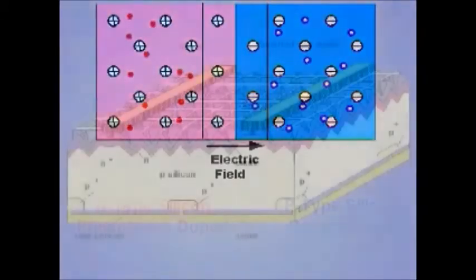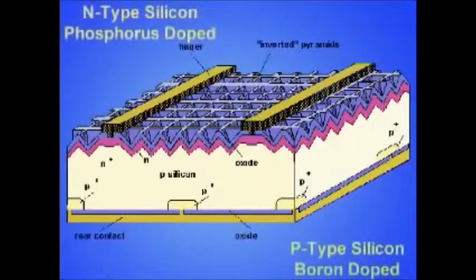When a p-n junction is made so that light can strike its top surface and metal conductors are attached to the p-type and n-type sides, a solar cell is formed.